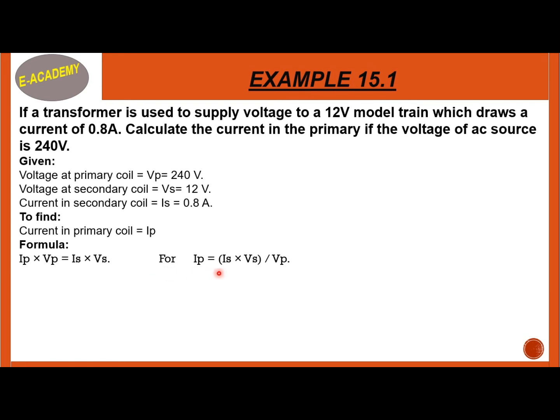If we solve for IP, it becomes IS times VS divided by VP. When we put the values of IS, VS, and VP into this formula, we will get IP.